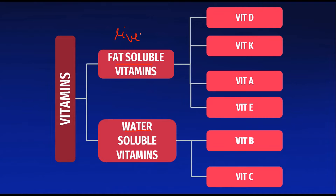Fat-soluble vitamins are vitamins D, K, A and E. Water-soluble vitamins, as the name suggests, are dissolved in water. These are absorbed into tissues for immediate use and are not stored in the body, so regular intake of water-soluble vitamins is necessary. Water-soluble vitamins are vitamin B and vitamin C.